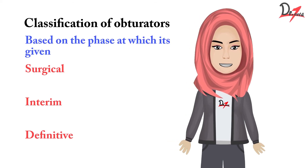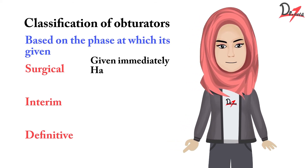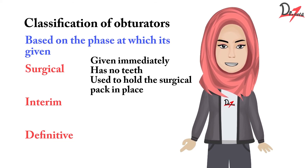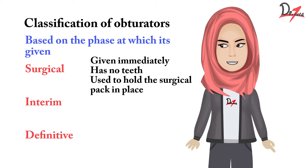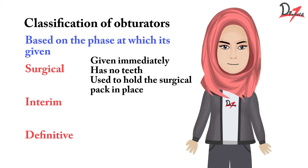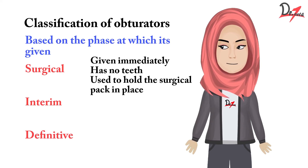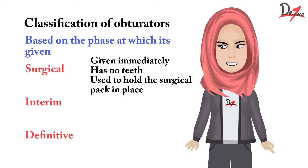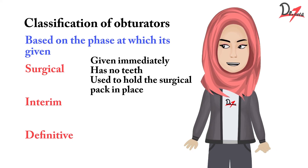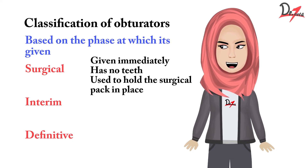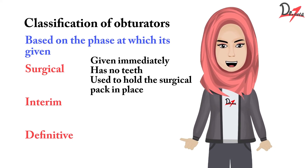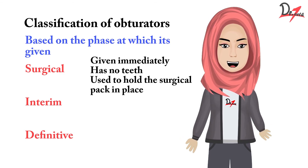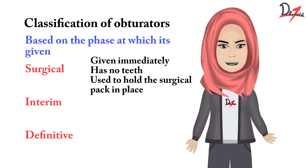The surgical obturator does not have any teeth. It is just meant to retain the surgical pack. After surgery, this plate will retain the surgical pack and help in the healing of tissue. It will not allow contamination of the surgical area. Such obturators usually have retentive tags on the palatal surface so that they can retain the surgical pack. The surgical obturator is usually made up of clear acrylic.